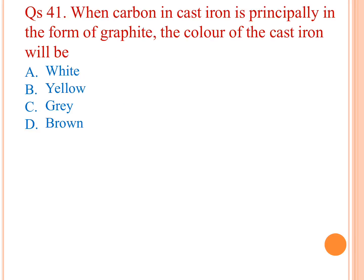When carbon in cast iron is principally in the form of graphite, the color of cast iron will be gray.